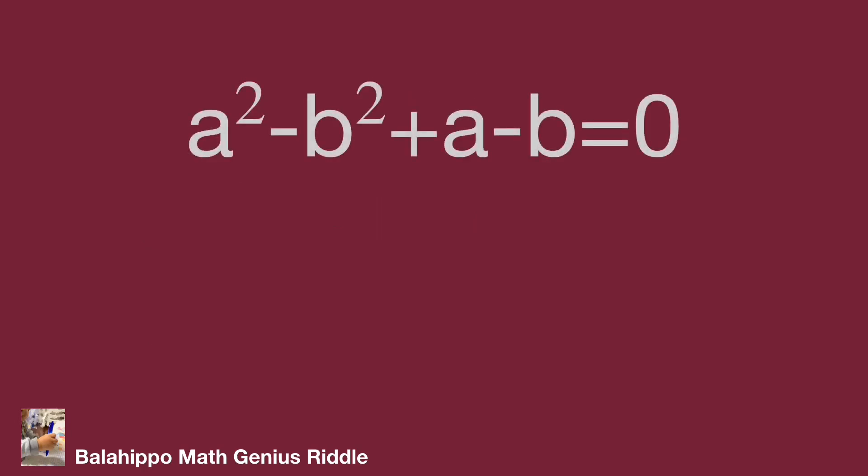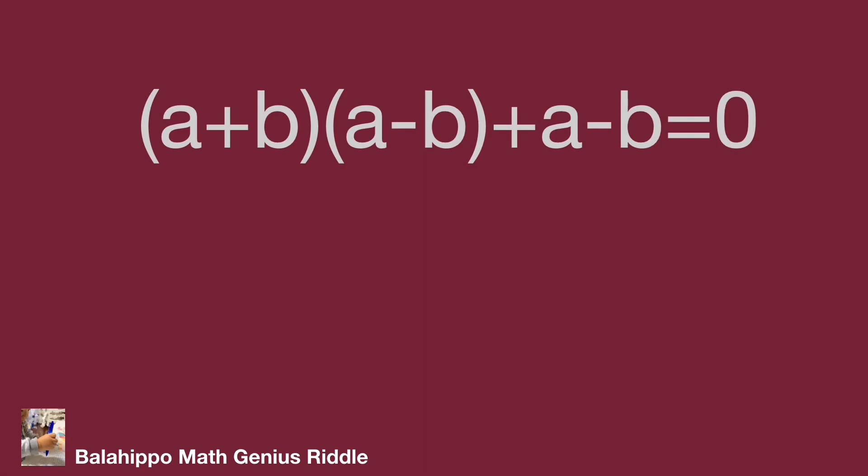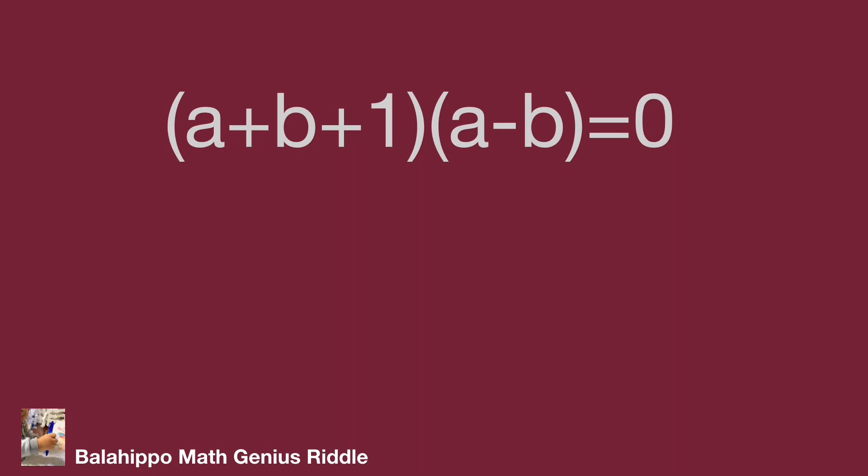Move all items to the same side of equation. a squared minus b squared can factorize as quantity a plus b multiplied by quantity a minus b. We can find there is an a minus b factor in this equation. Factorize the equation as quantity a plus b plus 1 multiplied by quantity a minus b equal to 0.